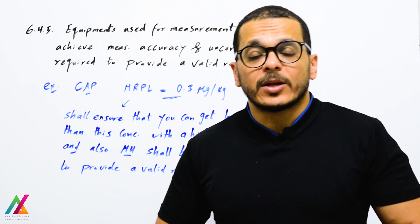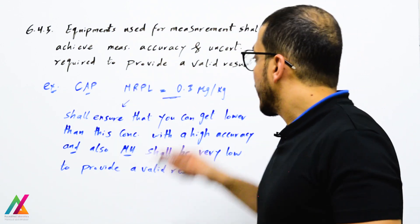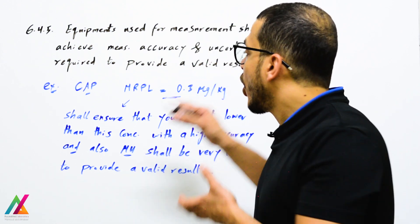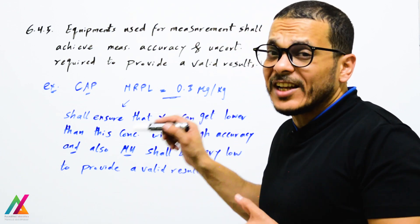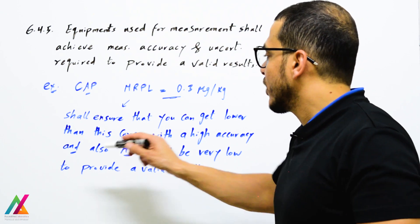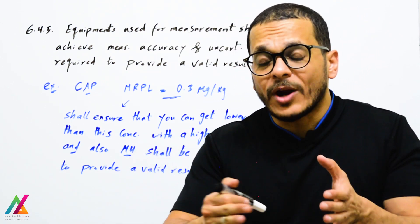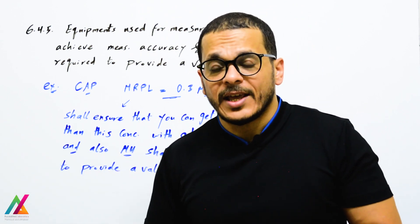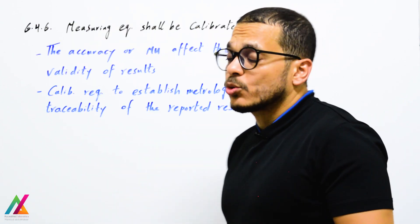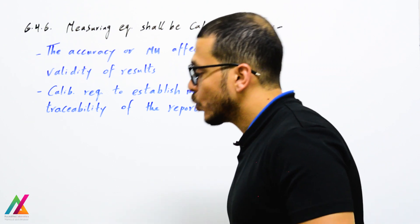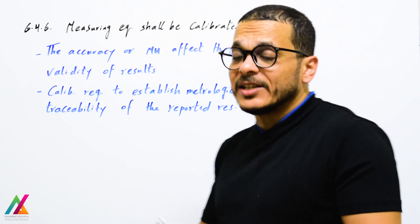You shall ensure the instrument can cover the working range from the lowest to the highest concentration for target analytes with high accuracy, and that it achieves the required uncertainty. This is confirmed during method validation when evaluating method performance parameters. As an example, chloramphenicol in food of animal origin is a carcinogenic and banned compound. The minimum required performance limit (MRPL) is 0.3 µg/kg according to European limits — this is the highest accepted concentration. The instrument must detect below this concentration with high accuracy and sufficiently low measurement uncertainty.